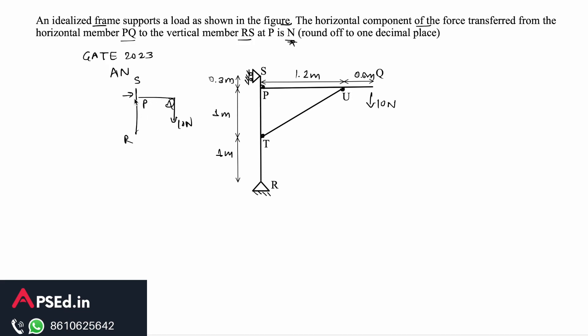We need to find what will be the horizontal force at this point P, at the intersection where these two members are meeting. Now you might think that we have a vertical load here and the question is asking for the horizontal force, so the value must be zero.